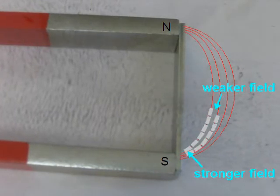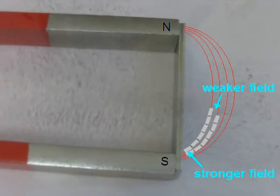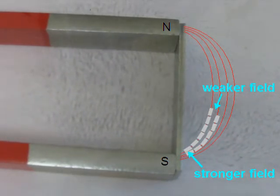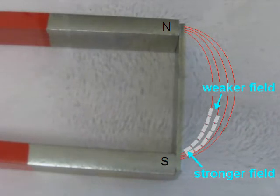These lines of little magnets also space themselves apart. Wherever they are close together, the magnetic field is stronger, like close to the end of the legs. Wherever they are farther apart, the magnetic field is weaker.